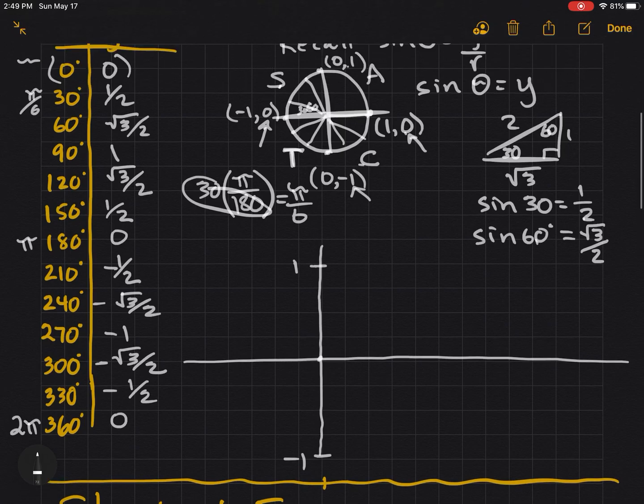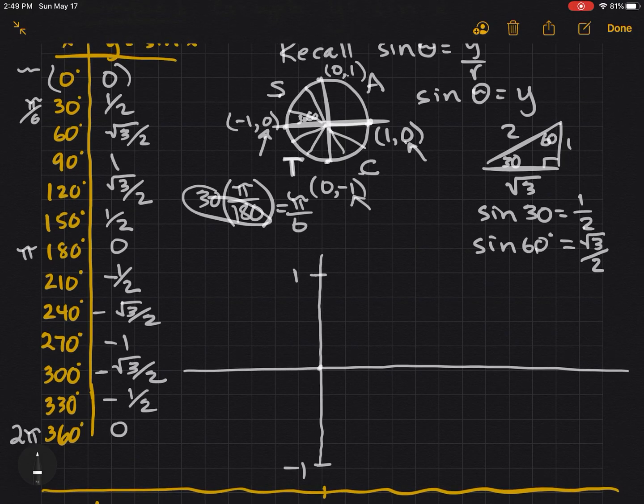And we could convert all of these measures. But each line is going to represent pi over 6 or 30 degrees. So 30, 60, 90, 120, 150, 180, which is pi. 210, 240, 270, 300, 330, 360 is 2 pi.